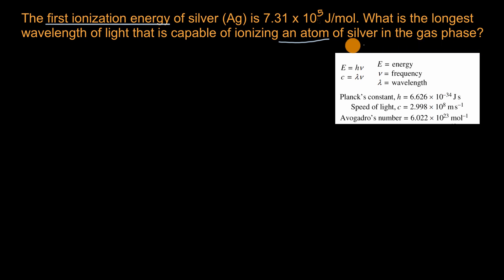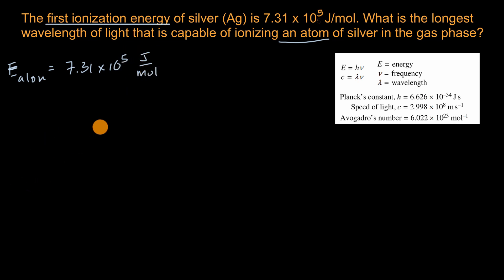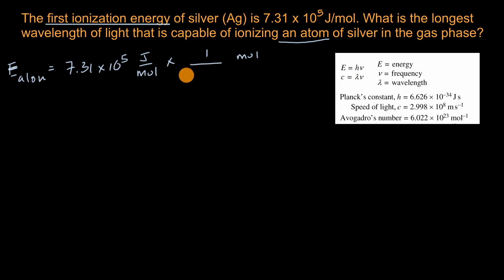Now let's work through this together. The first thing to do is figure out the first ionization energy per atom. The energy per atom is going to be equal to the ionization energy — 7.31 times 10 to the fifth joules per mole — times one mole for every 6.022 times 10 to the 23rd atoms. That gives us joules per atom, with the moles canceling out.